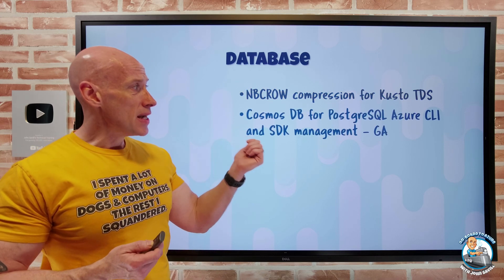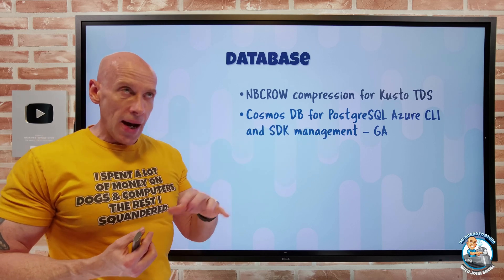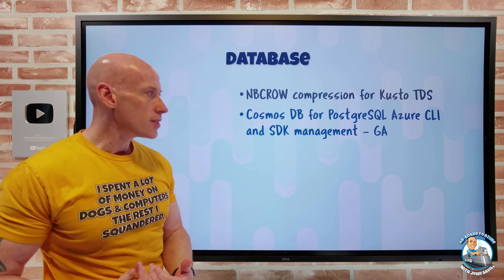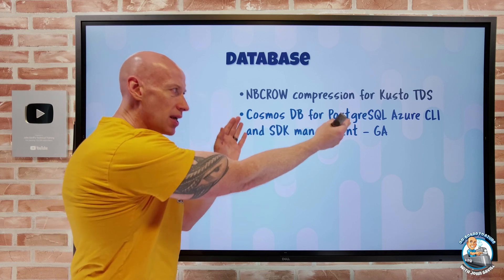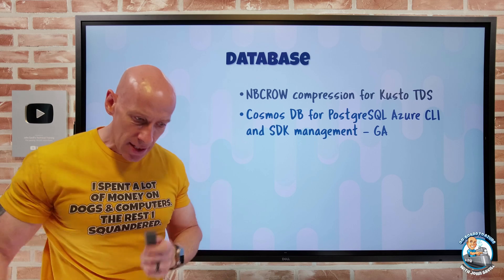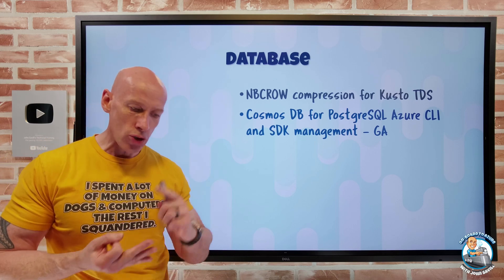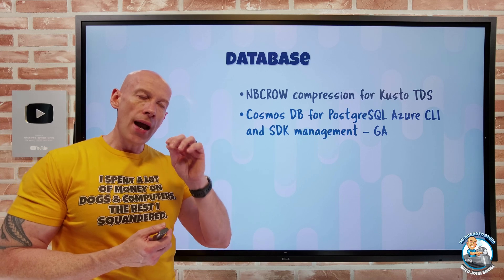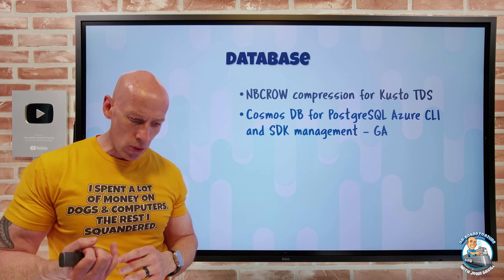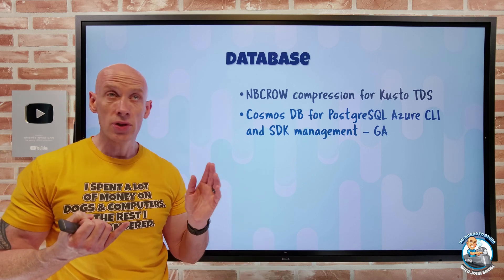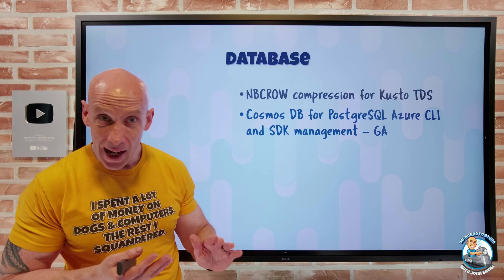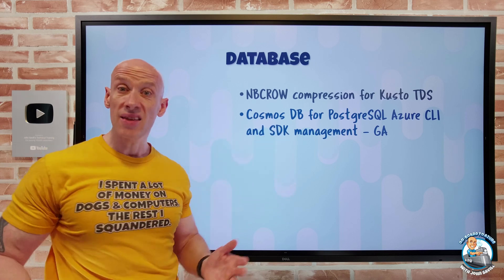Cosmos DB for PostgreSQL — which uses the Citus extension for bigger scale and higher performance, formerly known as PostgreSQL Hyperscale — now supports full resource management through both the Azure CLI and SDKs including .NET, Go, Java, JavaScript, and Python. This includes cluster creation, PostgreSQL server parameter changes, cluster node additions, and cluster node compute and storage scaling.